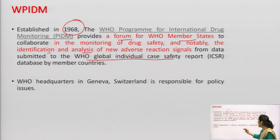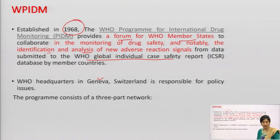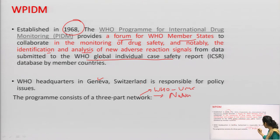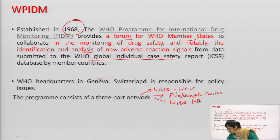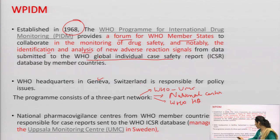WHO headquarters is in Geneva, Switzerland, and is responsible for policy issues. The program consists of a three-part network: the first part is the WHO UMC, second is the national centres in every country, and third is the WHO headquarters. The national pharmacovigilance centres from WHO member countries are responsible for case reports sent to the WHO ICSR database, which is managed by Uppsala Monitoring Centre in Sweden.